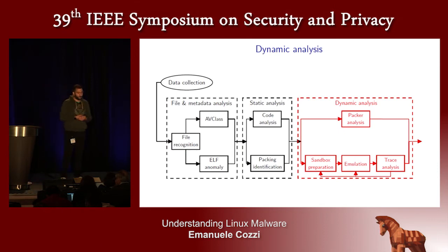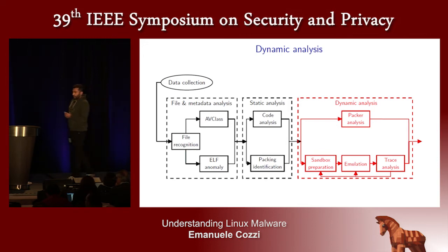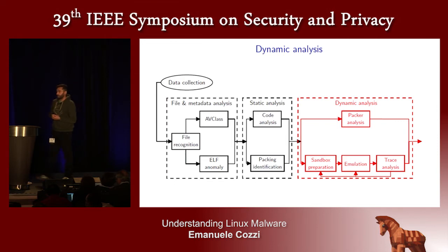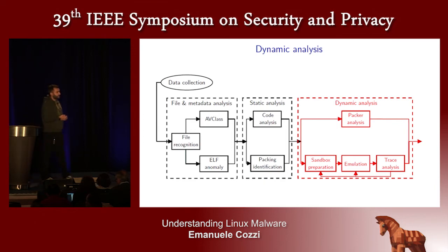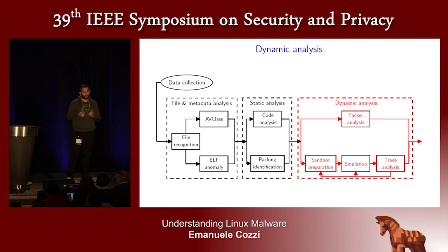The most important part of the pipeline is the dynamic analysis stage. We prepared different sandboxes based on different architectures and reconstructed different environments to finally run this malware, emulate their code, and collect behavioral traces. To collect traces inside the sandbox, we used a Linux facility already embedded in the kernel, based on kernel probes and user probes. We used kernel probes to trace the system calls the malware executes, checking arguments passed and return values.